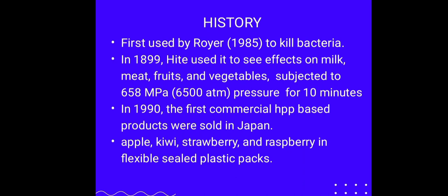Now, let us discuss how HPP evolved over the course of time. It was first used by Royer in 1985 to kill bacteria. Later, in 1899, Height used it to see effects on milk, meat, fruits and vegetables which were subjected to 658 MPa pressure for 10 minutes. Then, over the course of time in 1990, the first commercial HPP-based product was sold in Japan which included jam made from apple, kiwi, strawberry and raspberry in flexible sealed plastic packs.